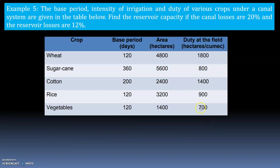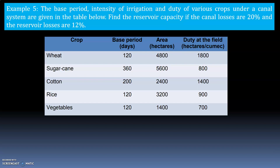Let us take one more example. The base period, intensity of irrigation, and duty of various crops under a canal system are given in the table below. Find the reservoir capacity if the canal losses are 20 percent and the reservoir losses are 12 percent. The total volume divided by the losses gives the required capacity of the reservoir.